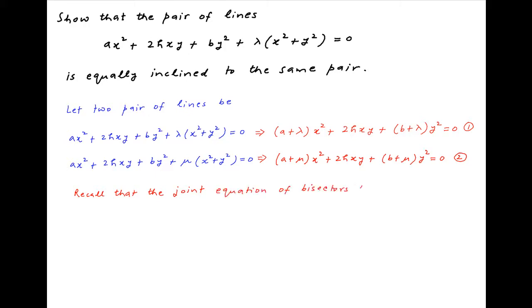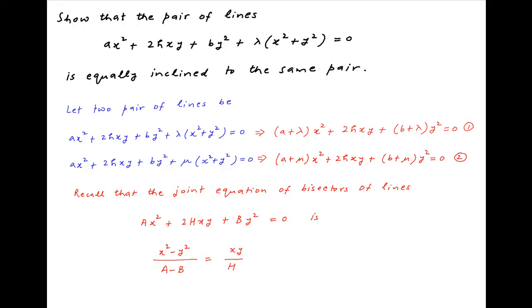Now recall that the joint equation of the bisectors of the lines represented by ax² + 2hxy + by² = 0 is given by (x² − y²)/(a − b) = xy/h.